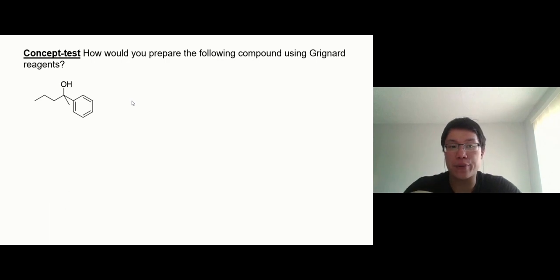First of all, this is tertiary alcohol. It's got three alkyl groups on it, which means that you have to make this from ketone and add one more alkyl group on it using Grignard reagent. So you have to start from the ketone. Ketone has two alkyl groups on it.